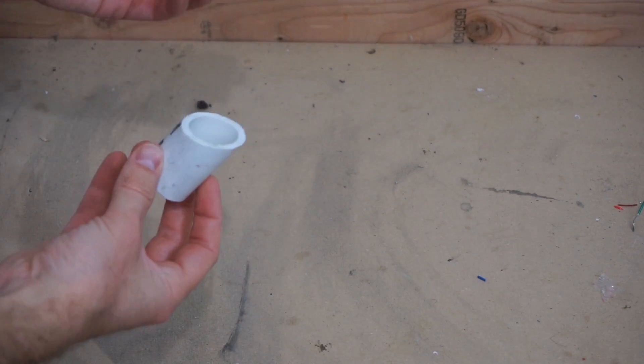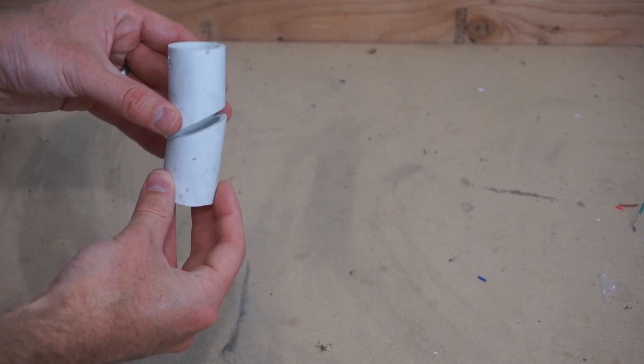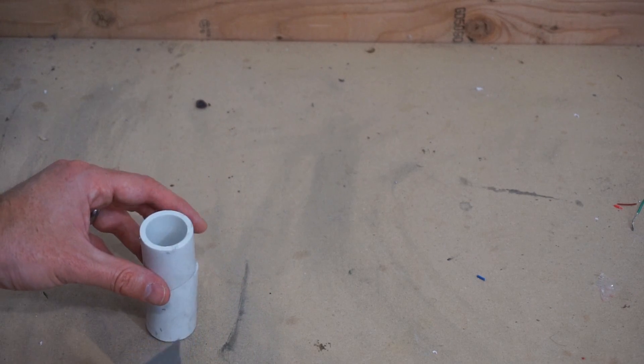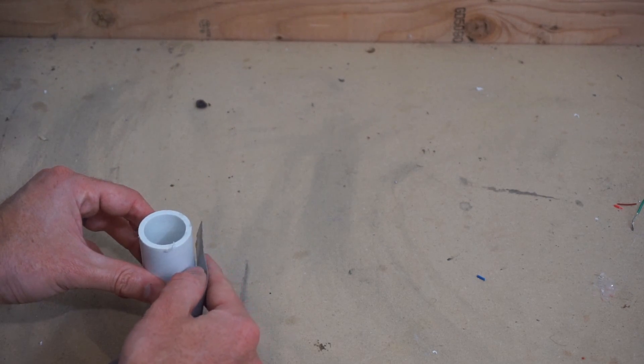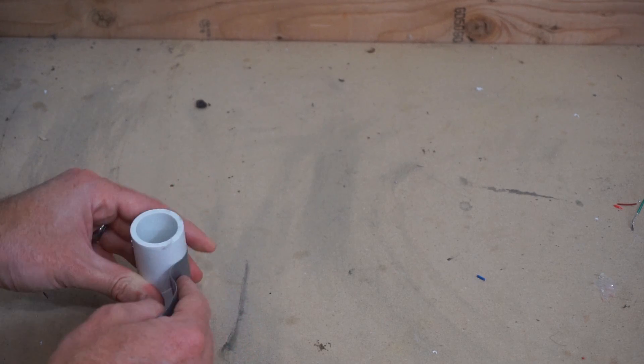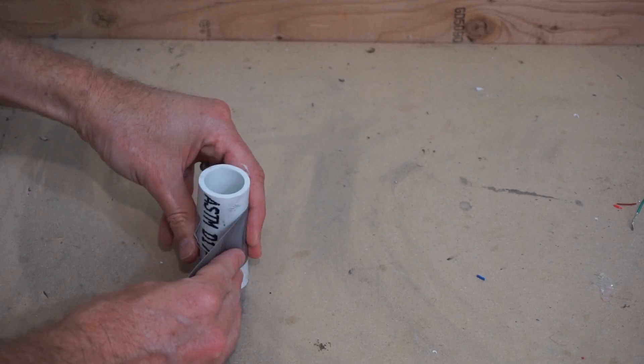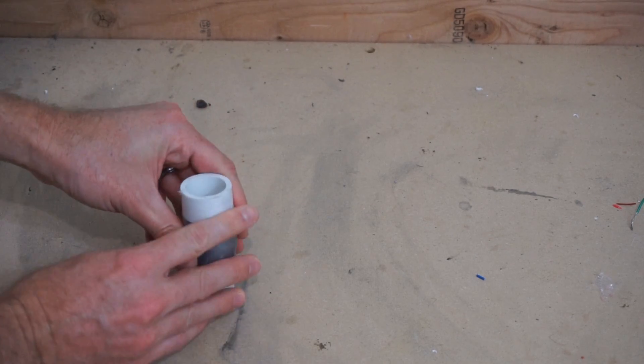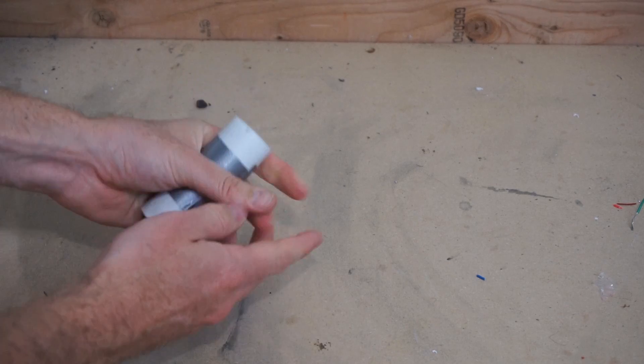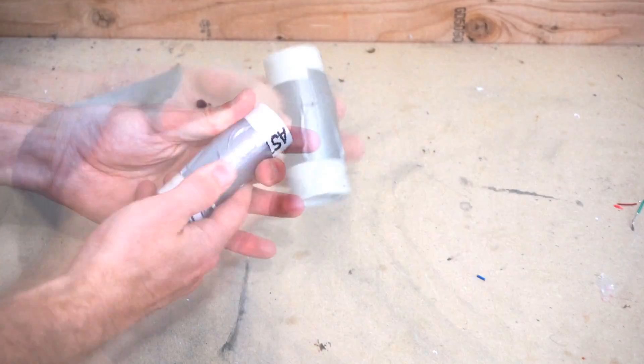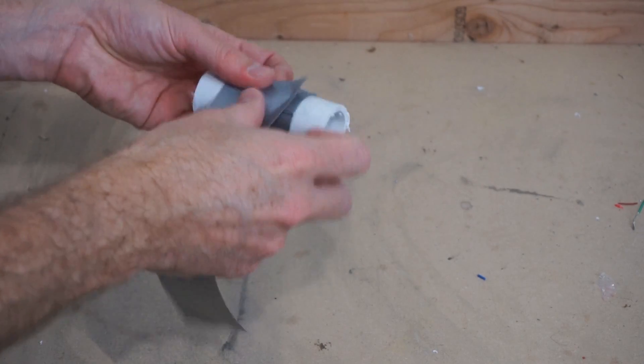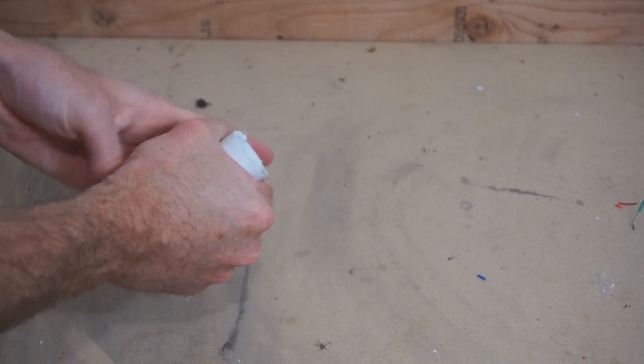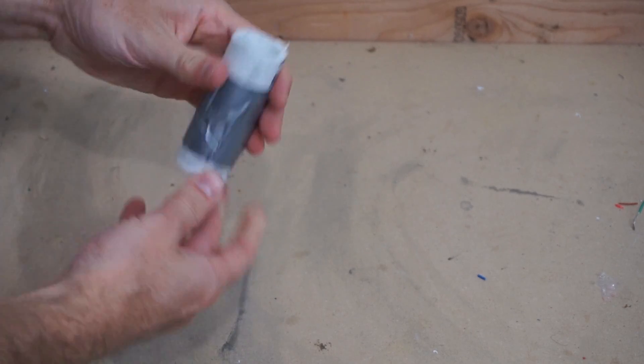So here's my pipe that I've sawed in half. Let's repair it first with good old fashioned duct tape. Put in one more layer. That should hold, right?